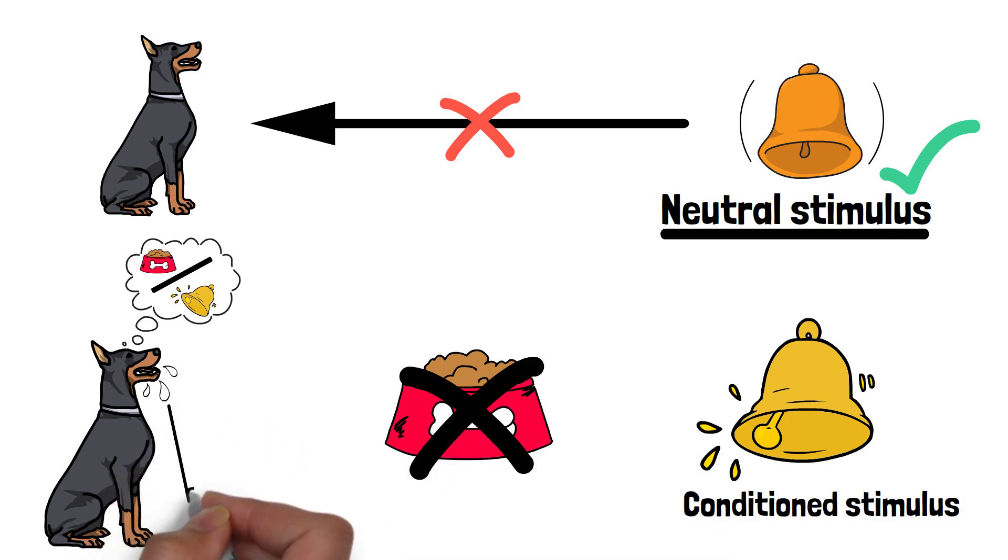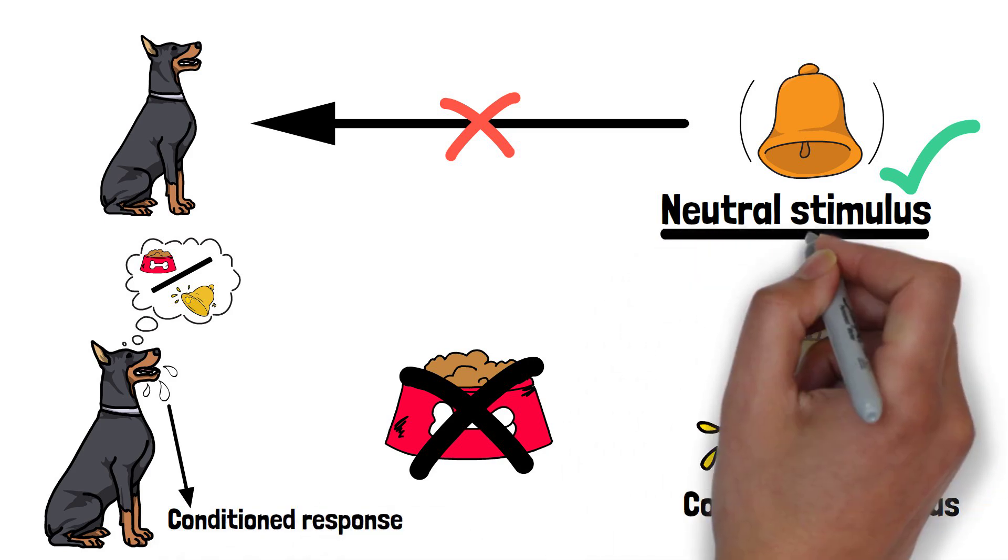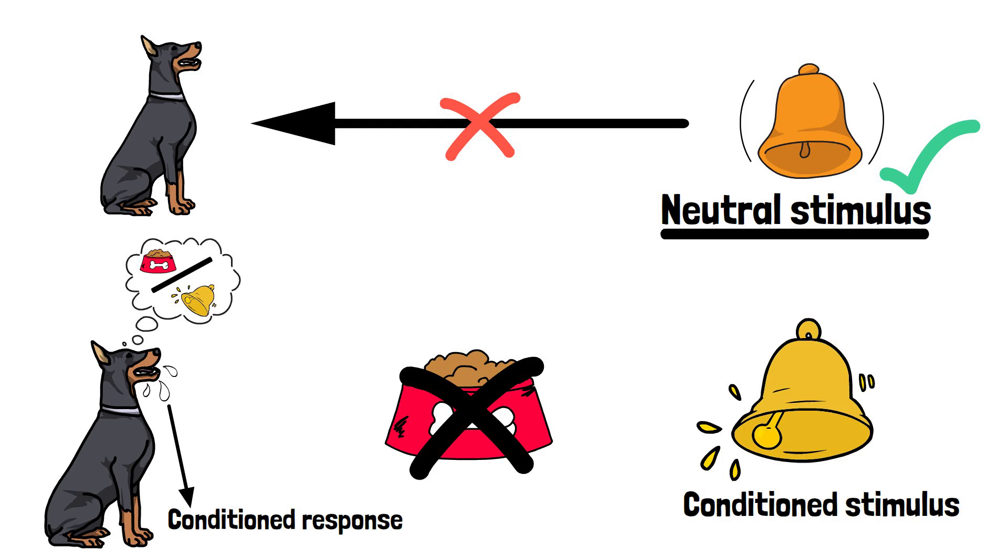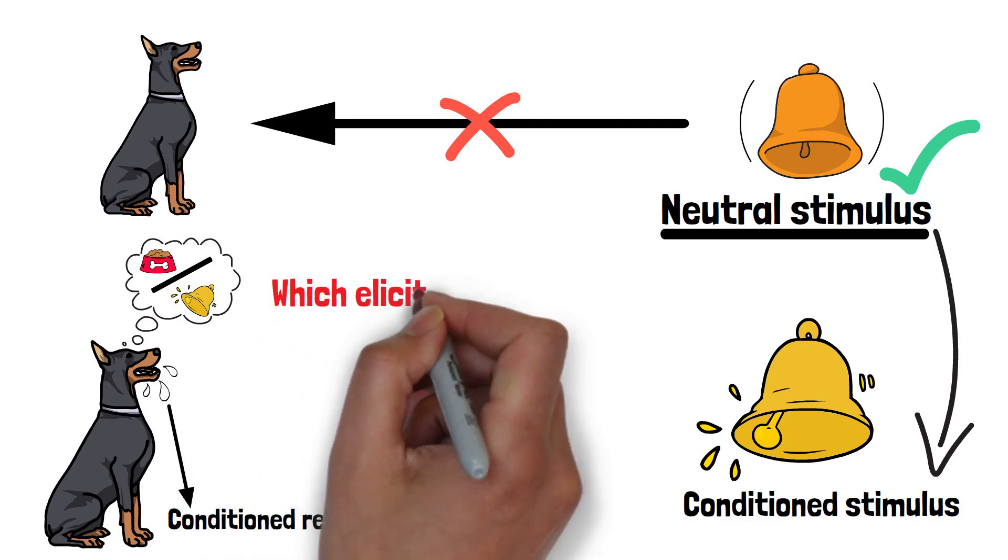This salivation in response to the bell is called the conditioned response. The bell had moved from being a neutral stimulus, which did not elicit any response, to a conditioned stimulus, which elicited a learned response.